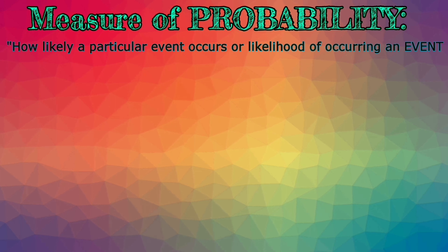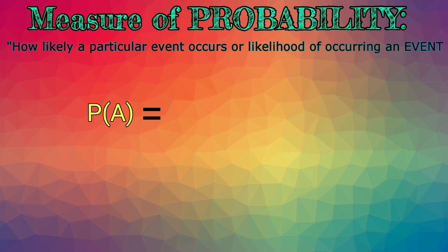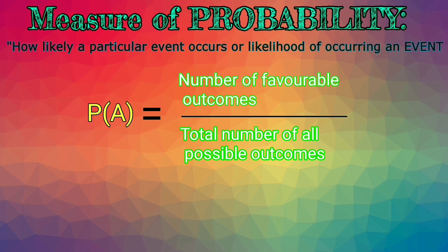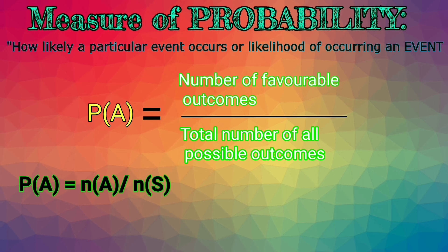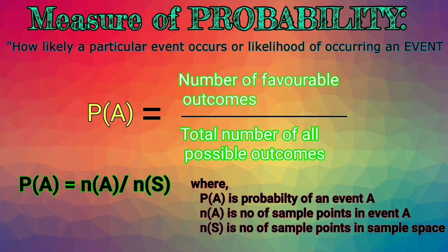Let's start with the measure of probability, which means how likely a particular event occurs, or the likelihood of an event occurring. The formula is: P(A) = number of favorable or desirable outcomes divided by the total number of all possible outcomes. This formula can also be expressed in terms of sample points and sample space as P(A) = n(A) / n(S), where P(A) is the probability of event A, n(A) is the number of sample points in event A, and n(S) is the number of sample points in the sample space.